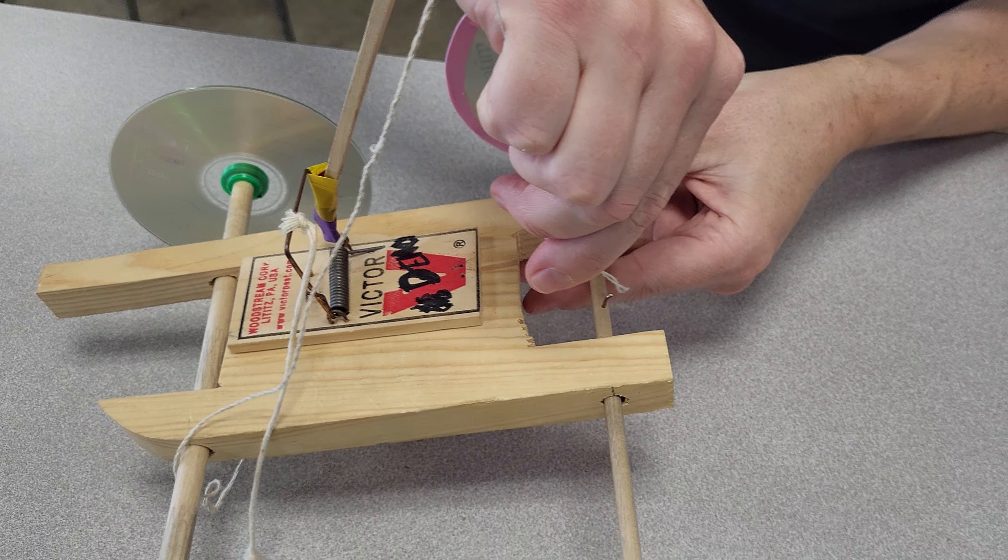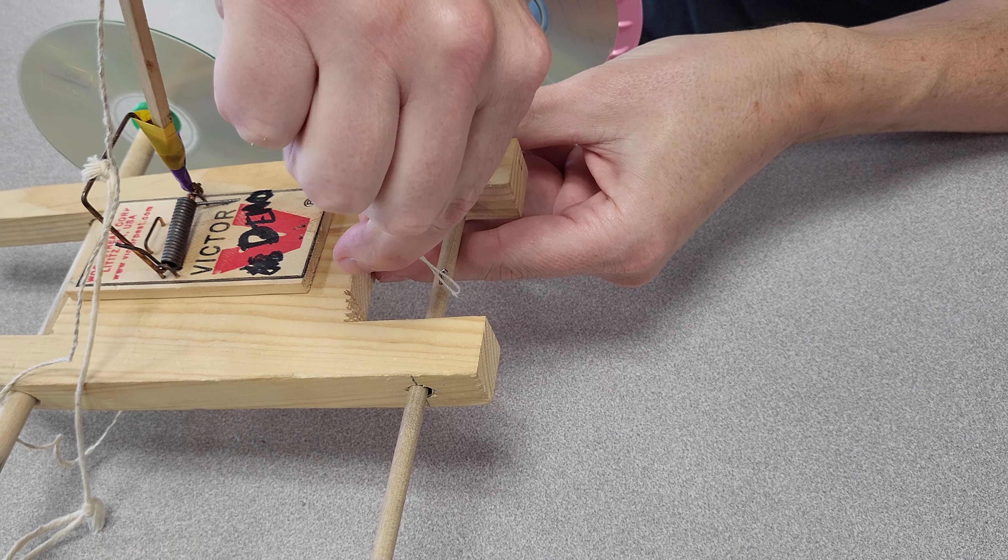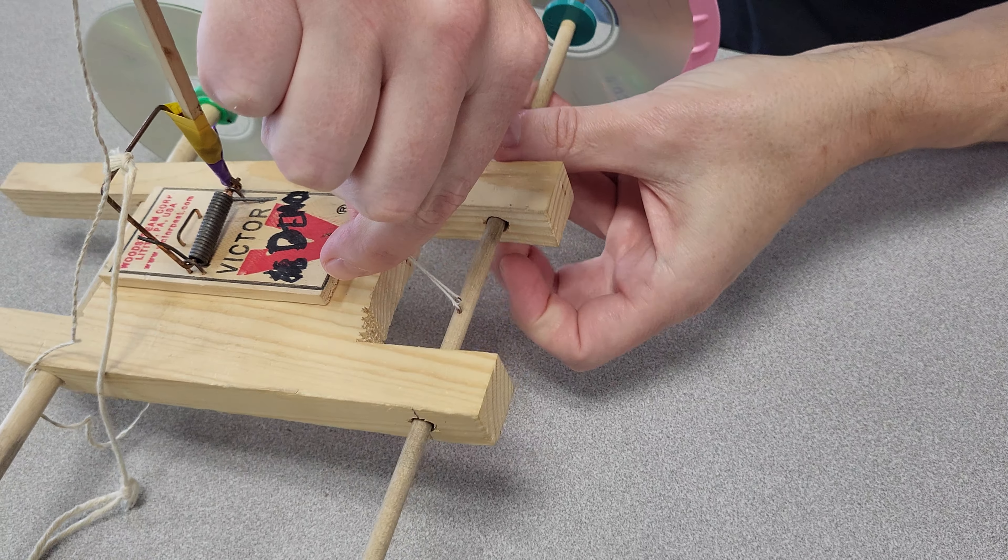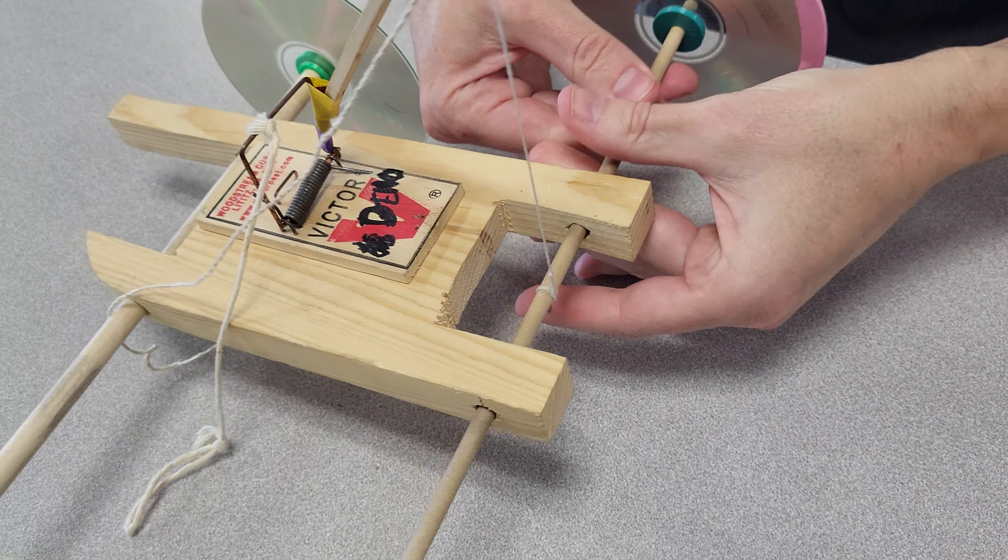then you can just get that loop over top of the little hook there, and then it just winds itself up.